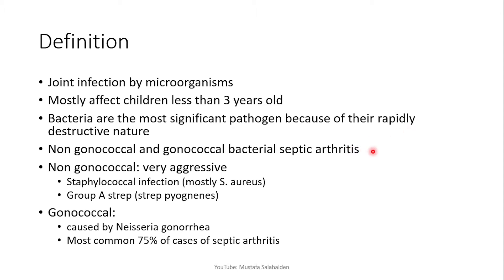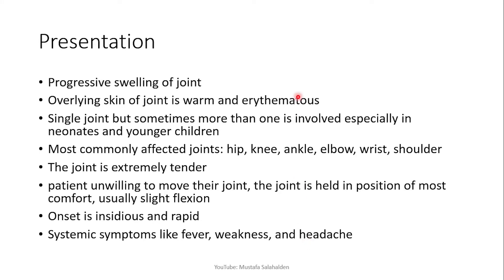Septic arthritis is described as non-gonococcal and gonococcal bacterial septic arthritis. The non-gonococcal type is usually very aggressive and is represented mostly by Staphylococcus aureus and Group A Streptococci, especially Streptococcus pyogenes. The gonococcal type is represented by Neisseria gonorrhoeae and accounts for 75% of cases of septic arthritis.